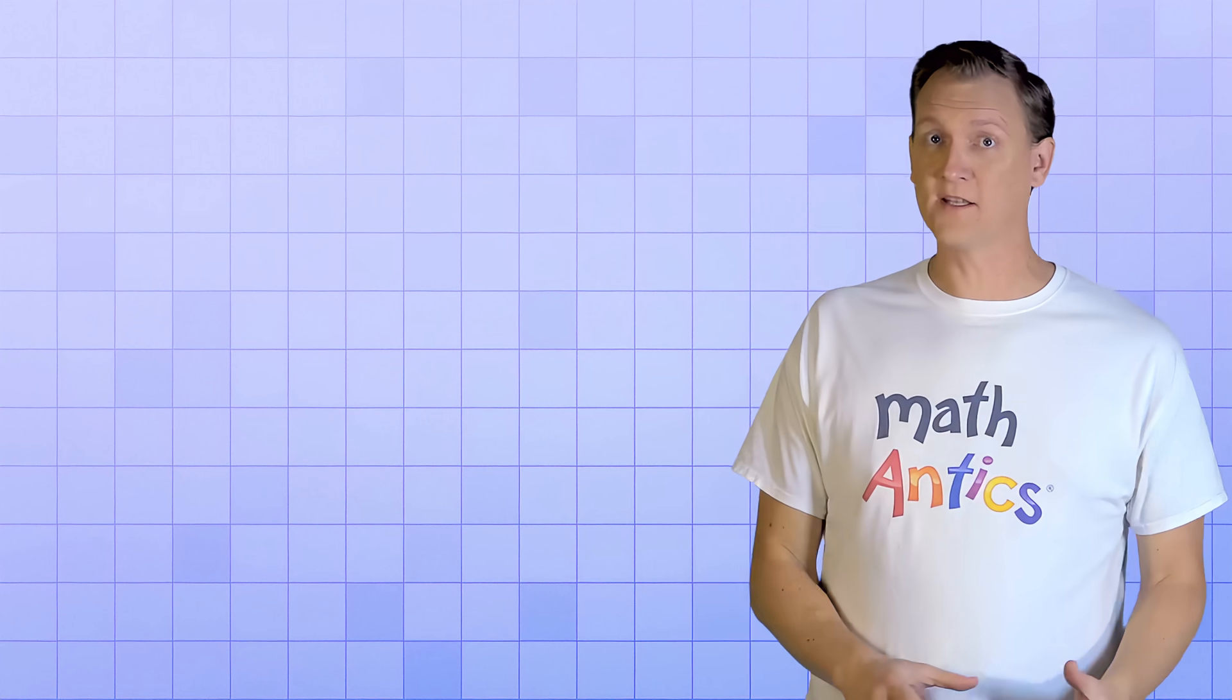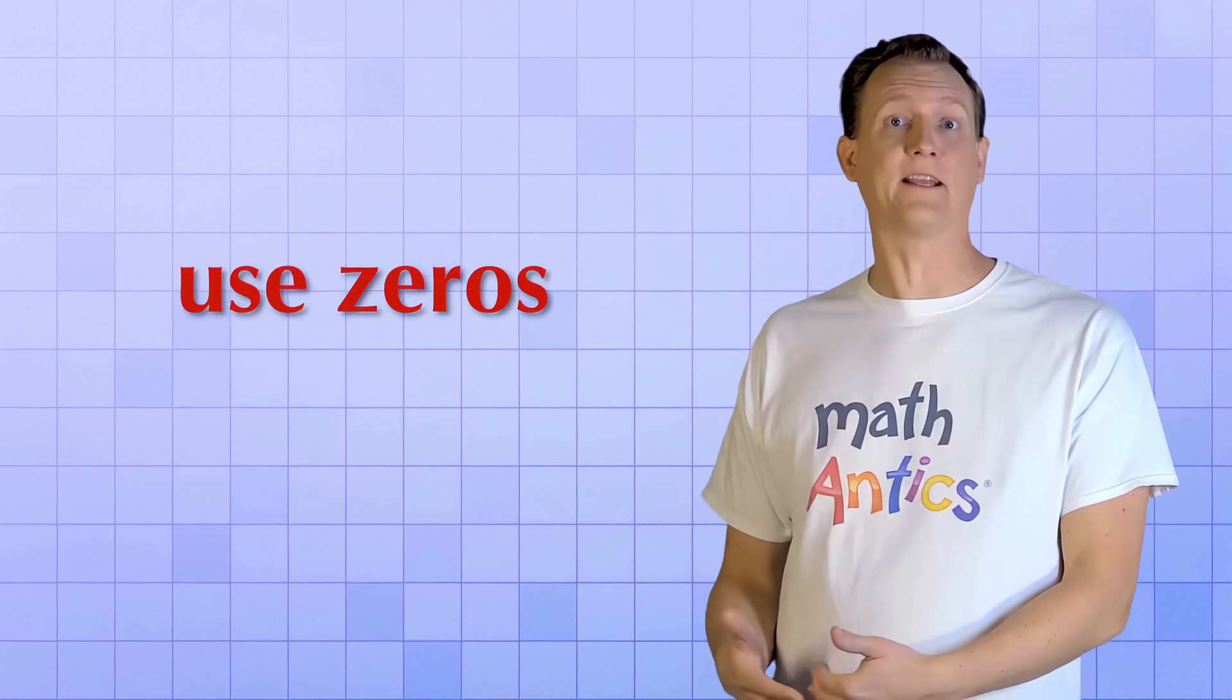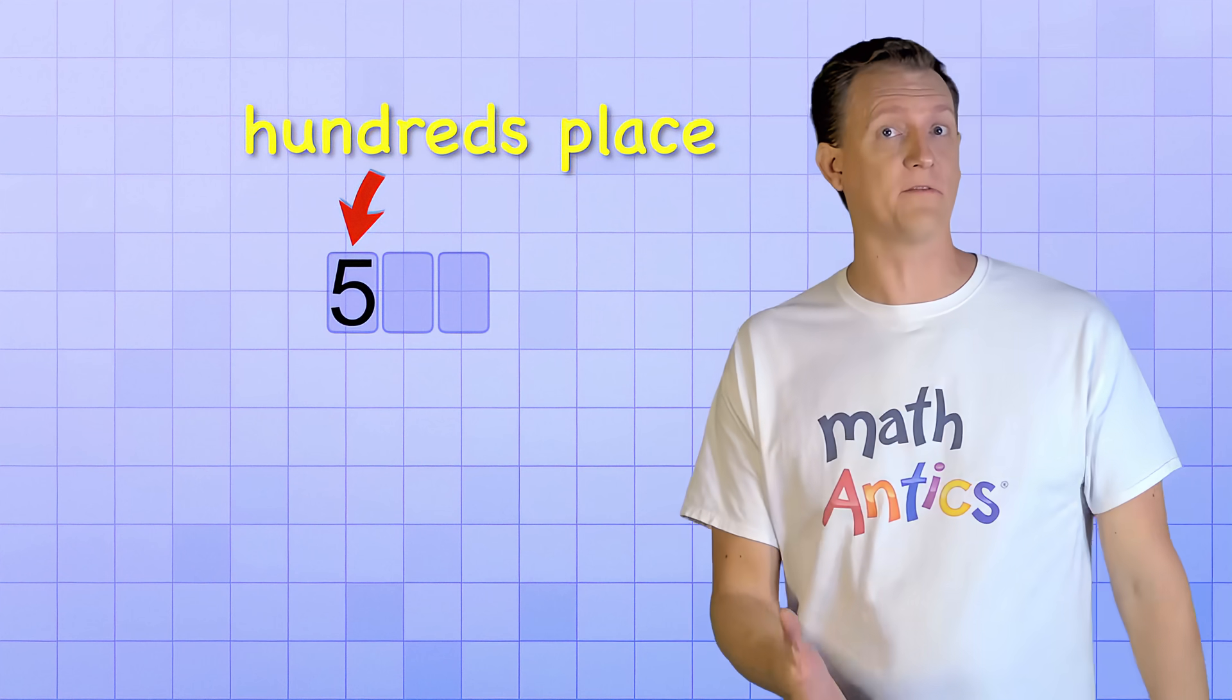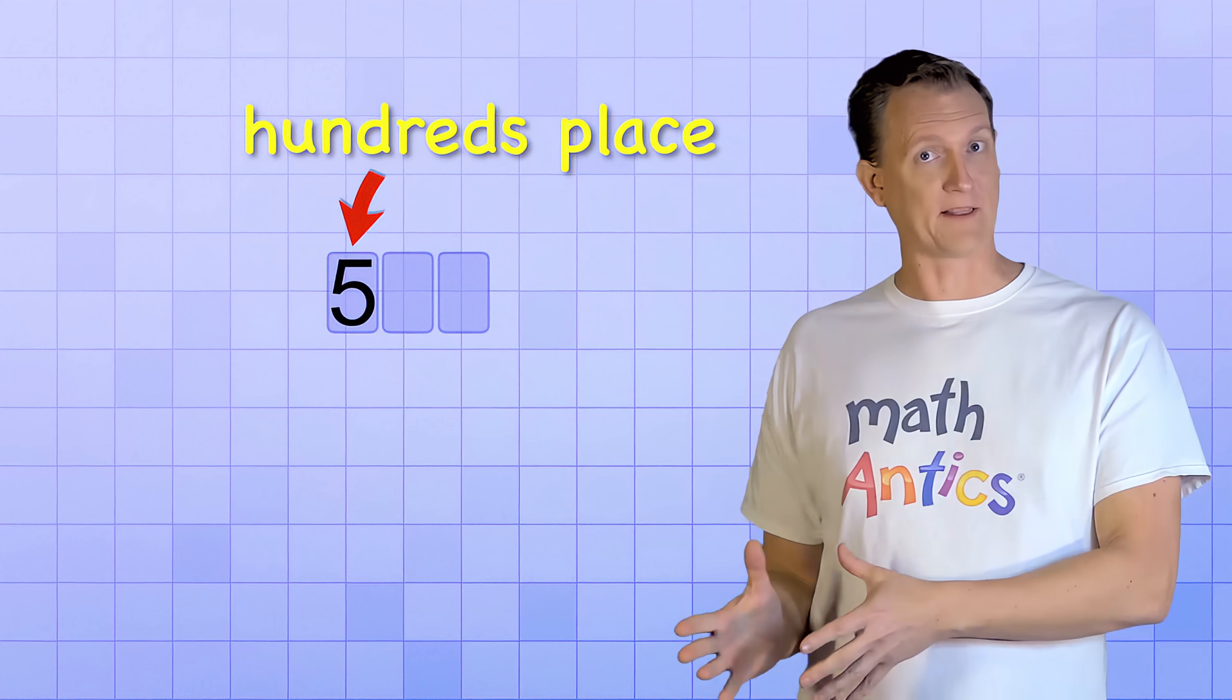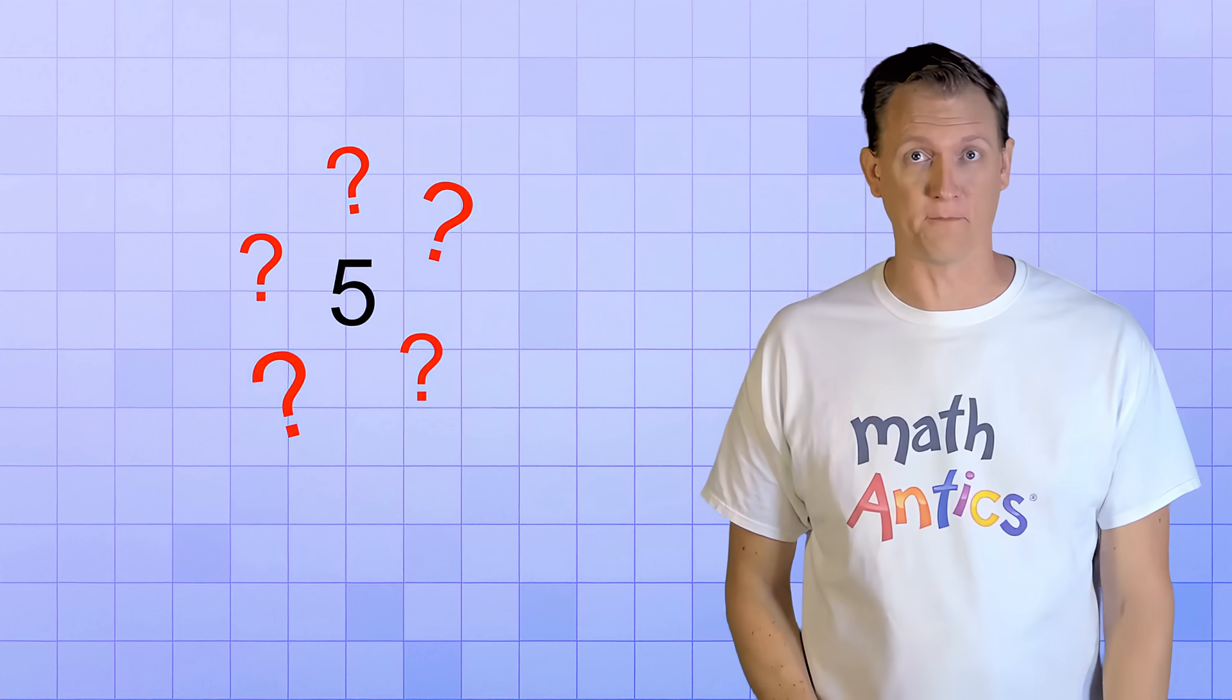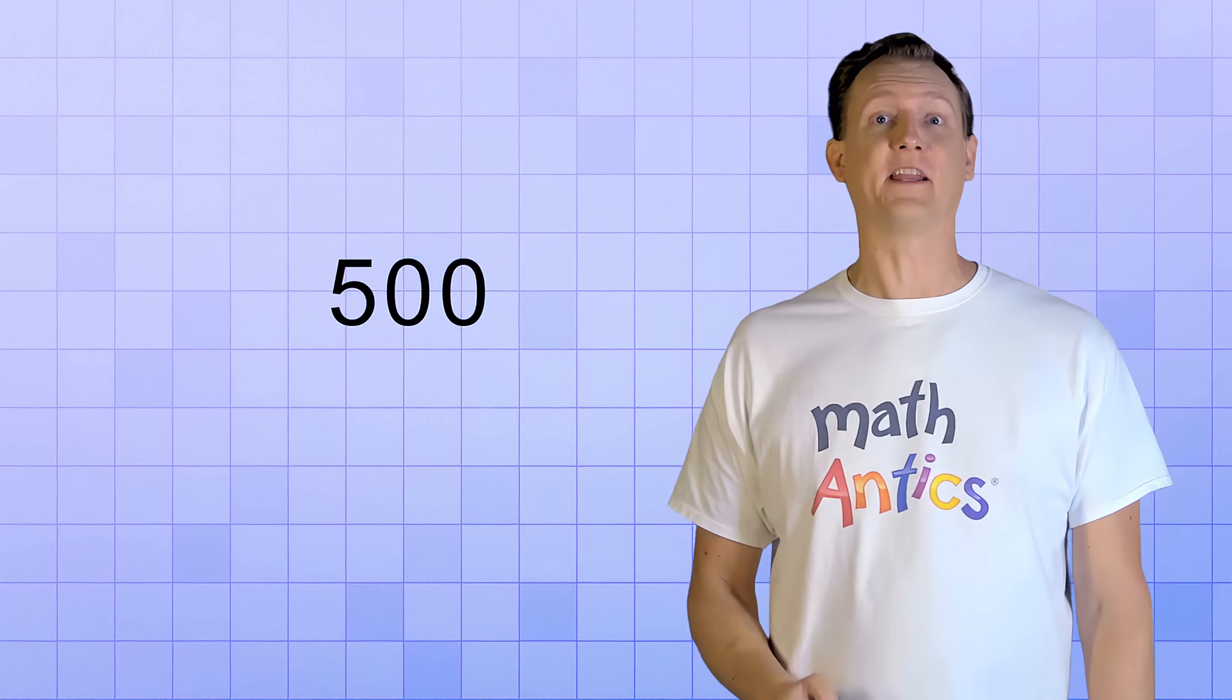Oh, and because the number places are invisible, in certain cases you'll need to use zeros to make it clear what number you're talking about. To see what I mean, imagine that this 5 is in the hundreds place to represent 500. But if you make the number places invisible, then it just looks like 5 and not 500. So, to make sure people know you mean 500, you need a 5 in the hundreds place, a 0 in the tens place, and a 0 in the ones place. Now you can tell that the 5 is in the hundreds place and it means 500.